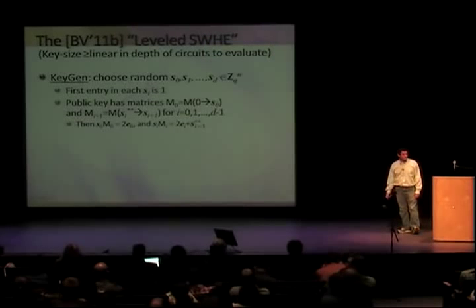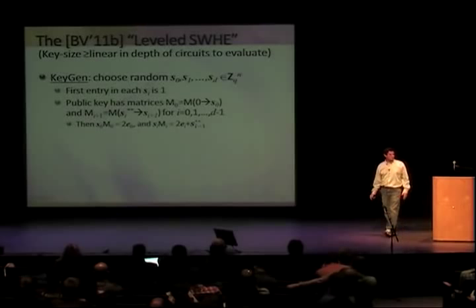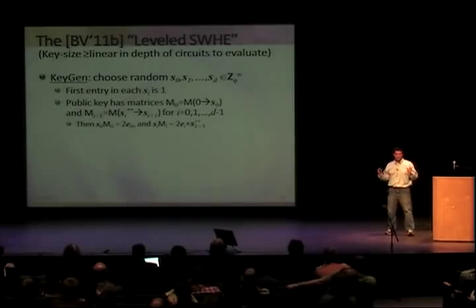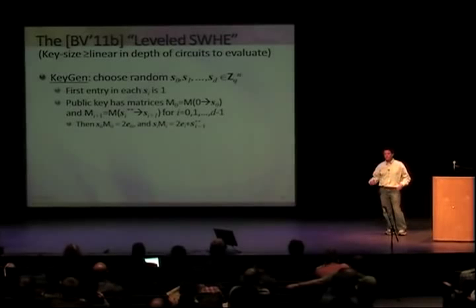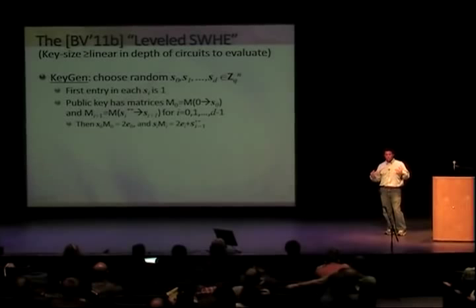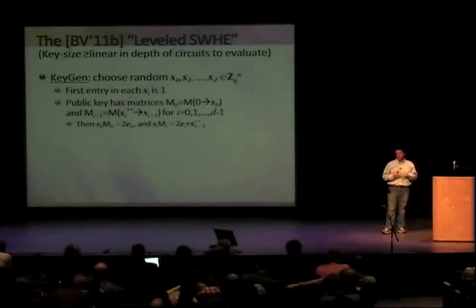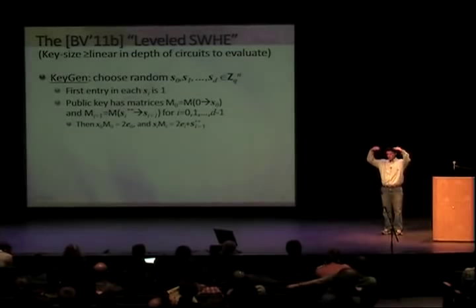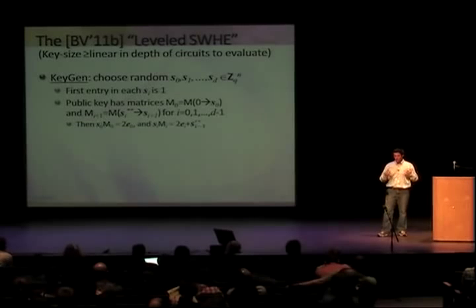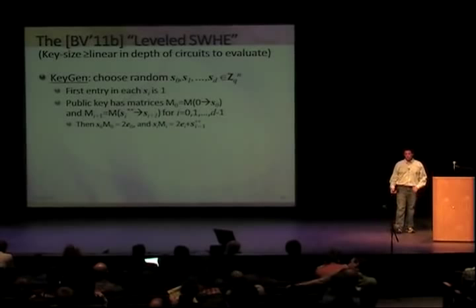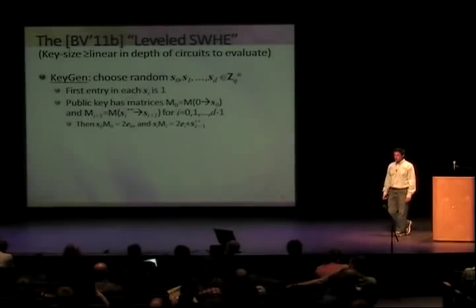With that, we have the first part of the BV construction: a leveled somewhat homomorphic encryption. 'Leveled' means we walk level by level because we need to change keys every level. Moreover, the public key size grows: for every level of multiplications, we need to publish one of these translation matrices. So the size of the public key depends on the depth of the circuit we want to evaluate. Additions you can do just by adding, but for each multiplication layer we publish a translation matrix.